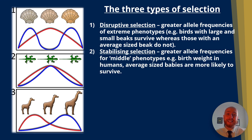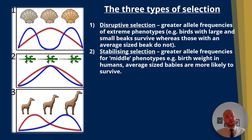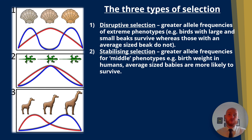The second type is stabilising selection, where greater allele frequencies for the middle phenotypes are selected. A key example is birth weight in babies — really big and really small babies both have a reduced survival chance, while average-sized babies have the greatest chance of survival.